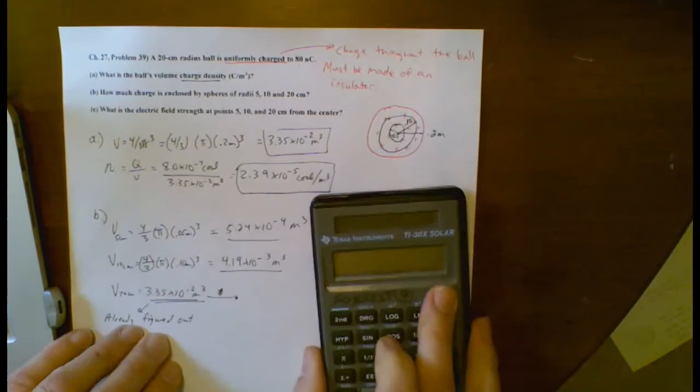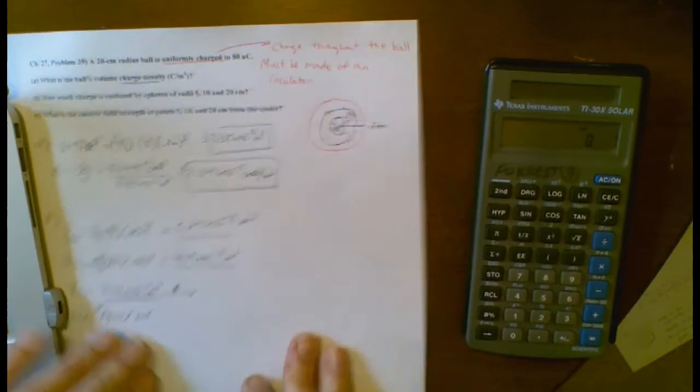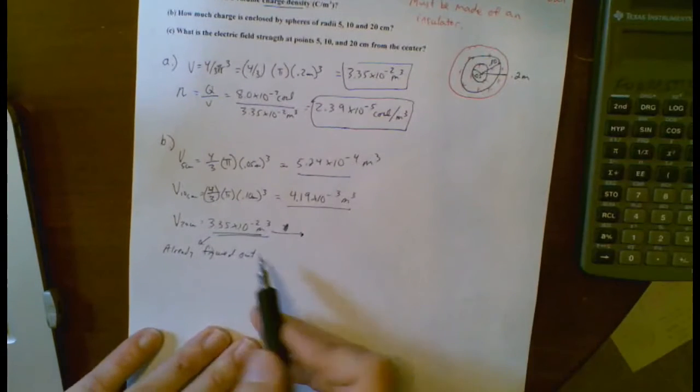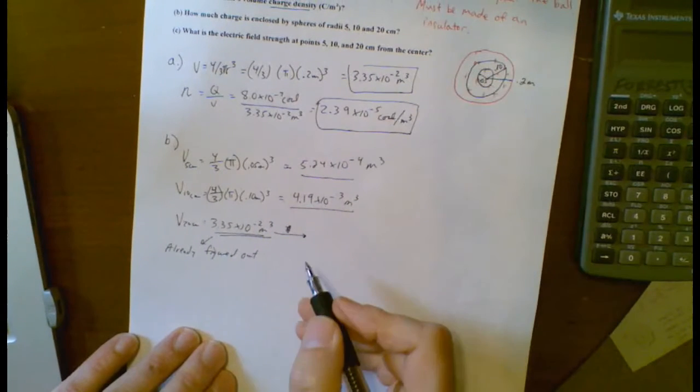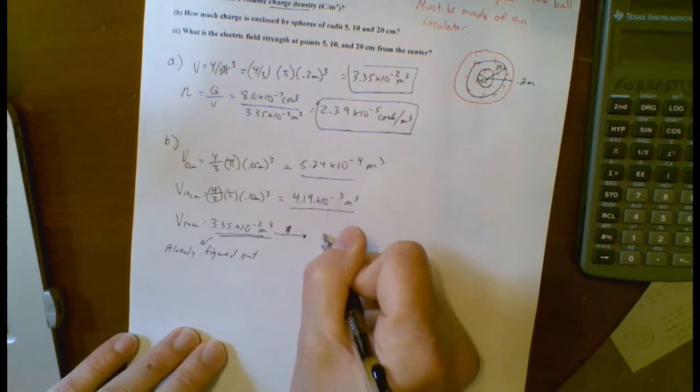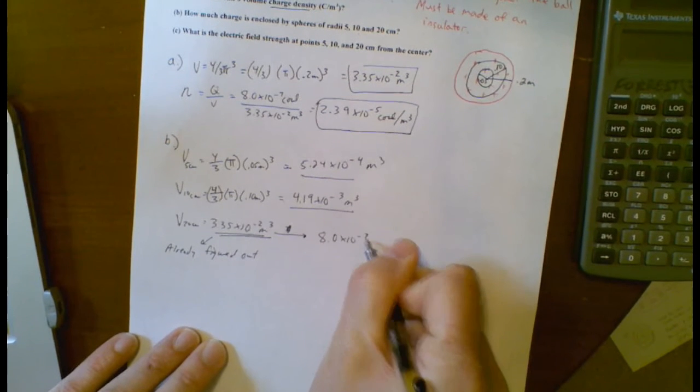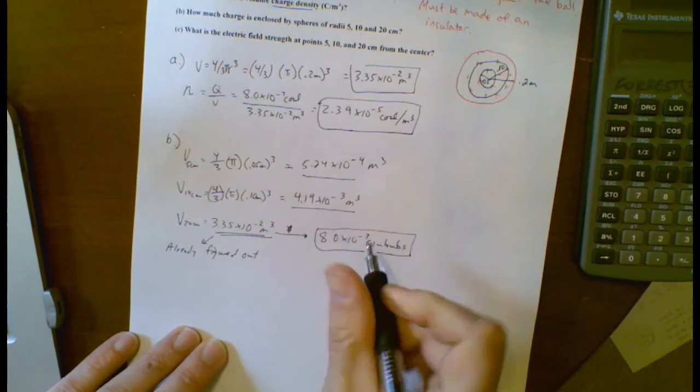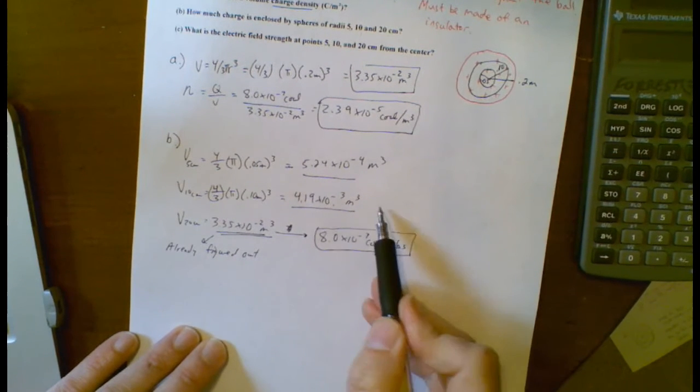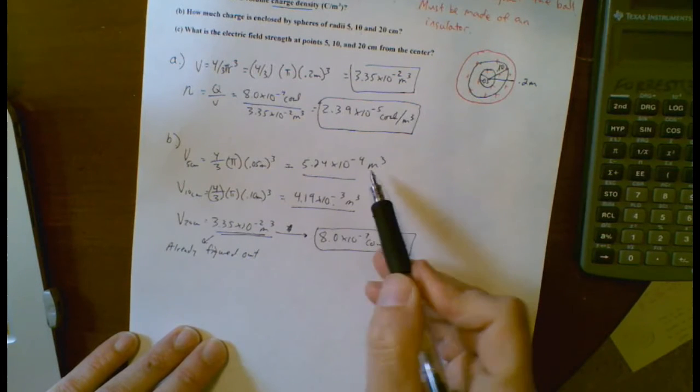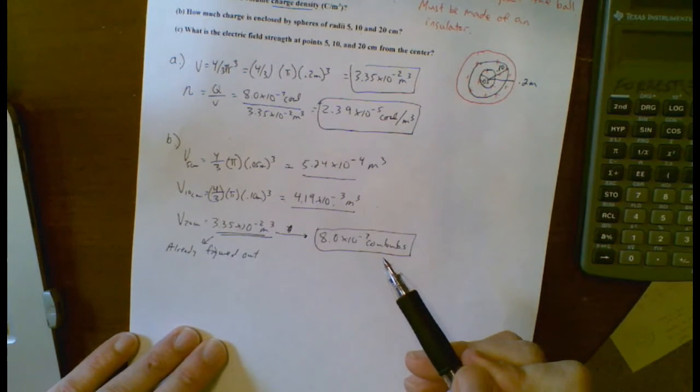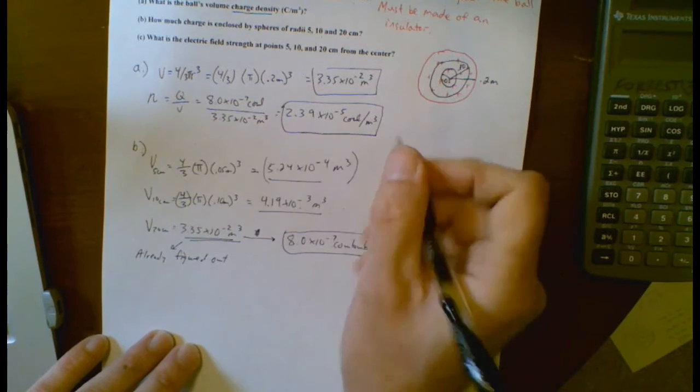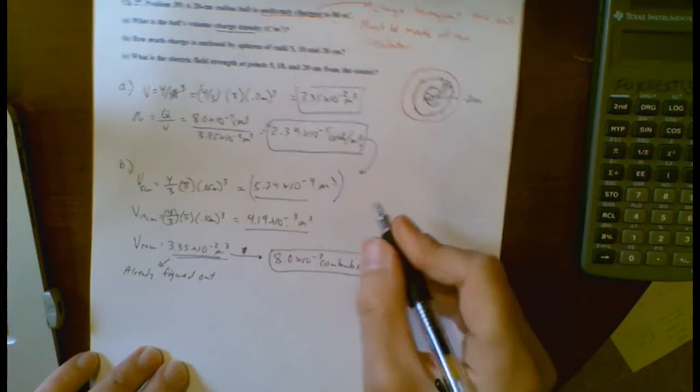So now if I want to find out how much charge is in that, I need to multiply that by the charge density. Here's the nice thing about this 20 centimeter one. I know 80 nano coulombs is how much is enclosed. It's the entire amount. So I can just simply say 8.0 times 10 to the negative seventh coulombs. Since the volume of this is an eighth as much, this should be 1 times 10 to the negative seventh coulombs. And the volume of this is eighth of this, it should be 1.25 times 10 to the negative eighth coulombs.